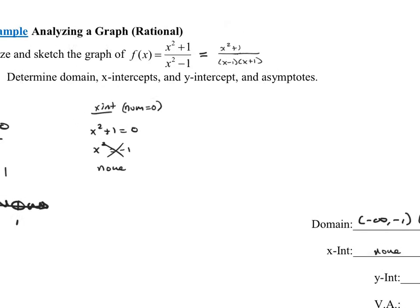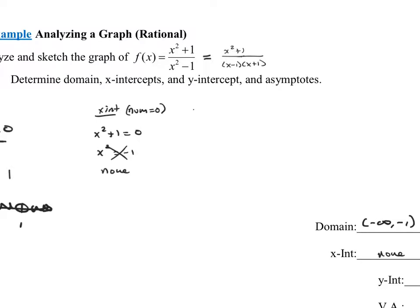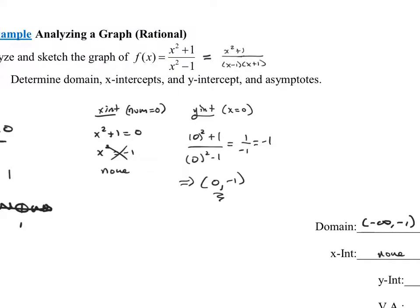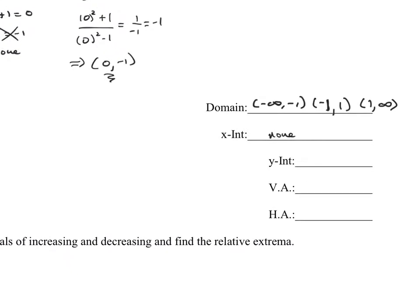For y-intercepts, plug in x equals 0. That gives 0 squared plus 1 over 0 squared minus 1, which is 1 over negative 1, which equals negative 1. So the y-intercept is the ordered pair 0, negative 1.